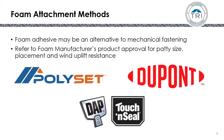Before proceeding, I'd like to spend a minute on foam attachment methods. Foam attachment may be an alternative to mechanical fastening. These listings are not in the FRSA TRI 6th edition, but rather in the foam manufacturer's product approval. You'll have to look at their patty sizes, their placement, and their uplift resistance, and compare those to your design pressures using that foam manufacturer's product approval.